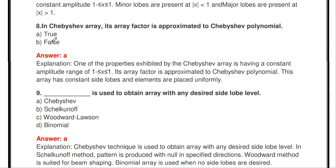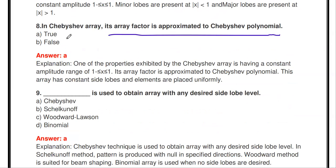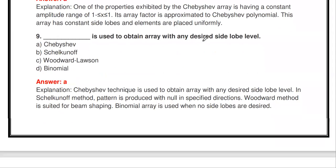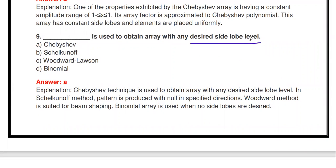In the Chebyshev array, the array factor is approximated to the Chebyshev polynomial. The Chebyshev technique is used to obtain an array with any desired side lobe level. So to design an array with any desired side lobe level, we use the Chebyshev array.